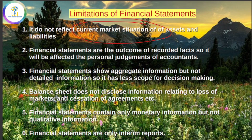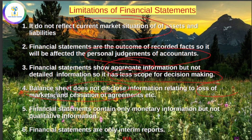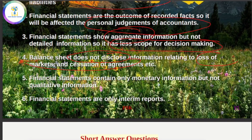Financial statements are the outcome of recorded facts, so they are affected by the personal judgment of accountants. This can affect the results and decision-making, because it is total and aggregate information. The balance sheet does not disclose laws of markets, agreements, changes, cancellations, etc. Financial statements deal only with monetary information and are interim reports — this is why there are limitations.